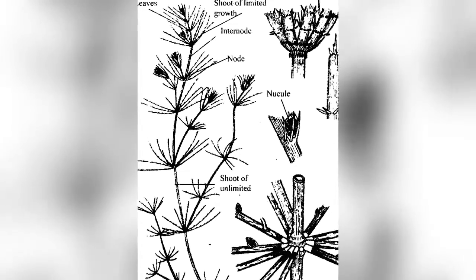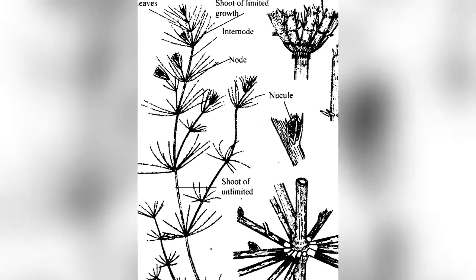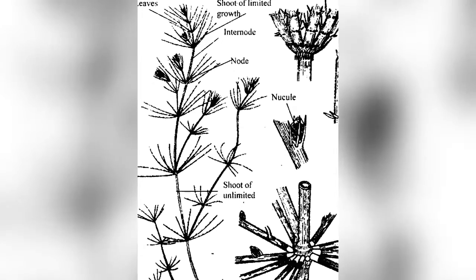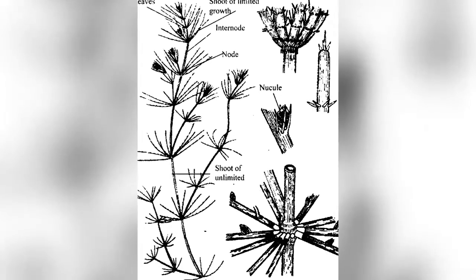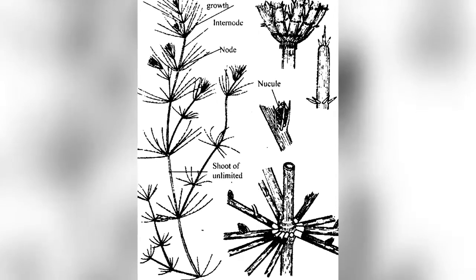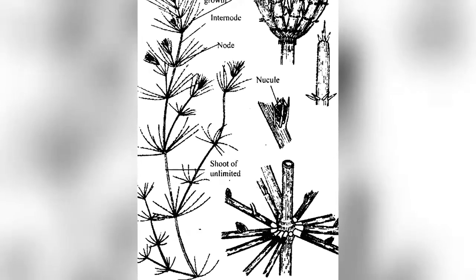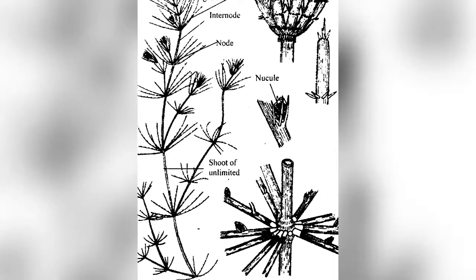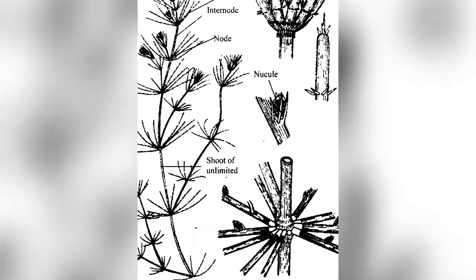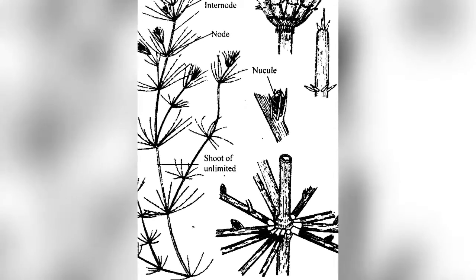The cytoplasm of internodal cells is divided into inner endoplasm, which lies next to the vacuole, and an outer ectoplasm having chloroplasts.